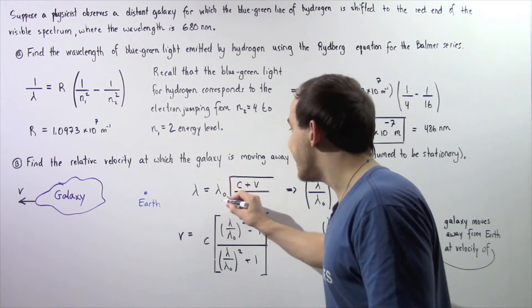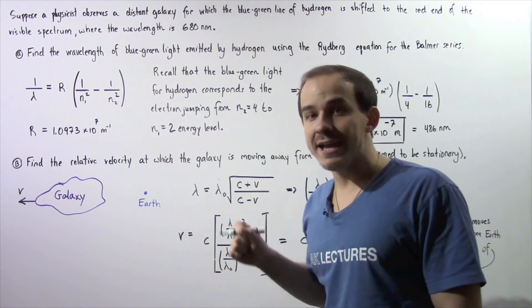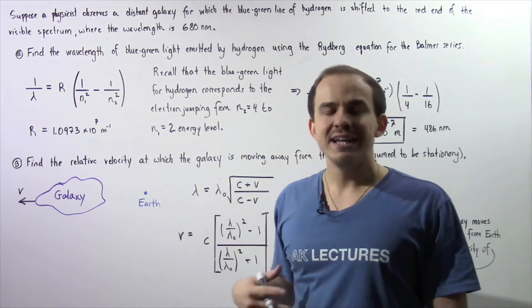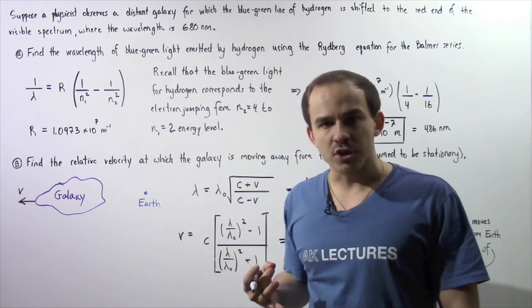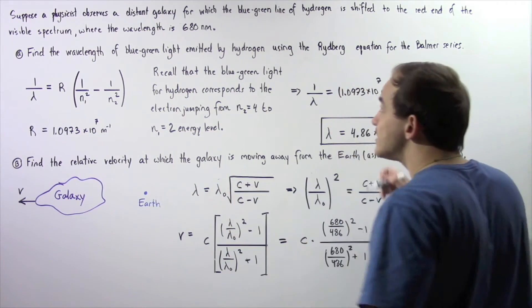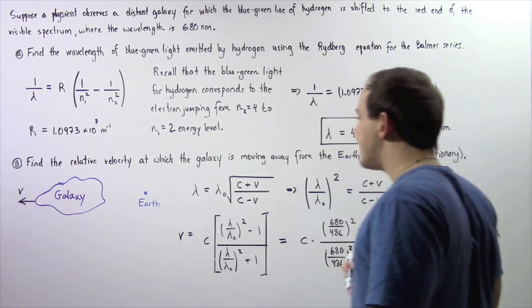Now this λ₀ is basically what we calculated in part A. It's the wavelength of the blue-green line, the blue-green light that is seen on Earth, on the stationary Earth. This λ is the quantity of 680 nanometers.